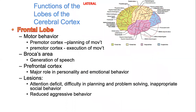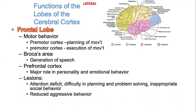Your frontal lobe is mainly responsible for two things: motor behavior and language. It dictates your movement. For motor behavior, you have your premotor cortex involved in planning of movement — for example, when you're going down the stairs, your brain plans for you to move one leg down, then the next. The motor cortex then executes the movement that has been planned in your premotor cortex.